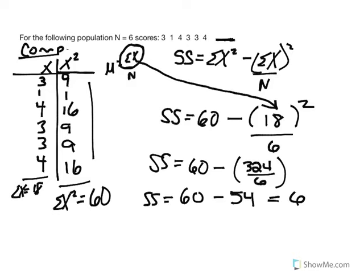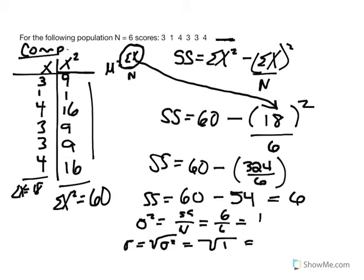To calculate population variance: SS over N equals 6 over 6 equals 1. Standard deviation is the average difference between scores and the mean, derived by taking the square root of variance. Square root of 1 equals 1. So our original estimate of the standard deviation — between 1 and 2, perhaps 1.5 — was pretty close because the actual is 1.